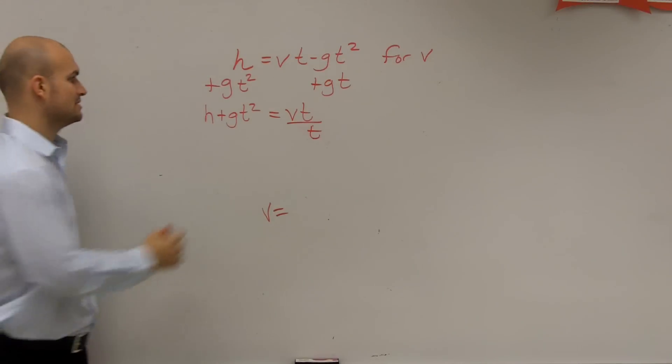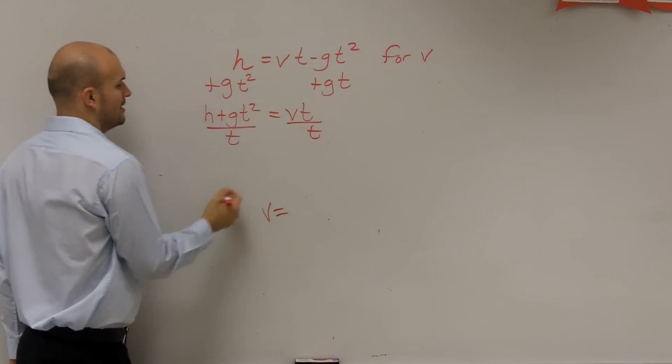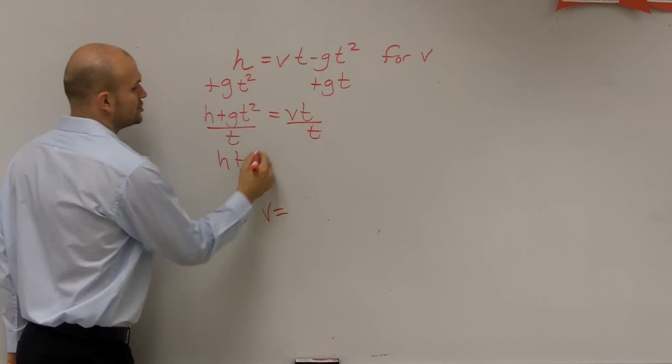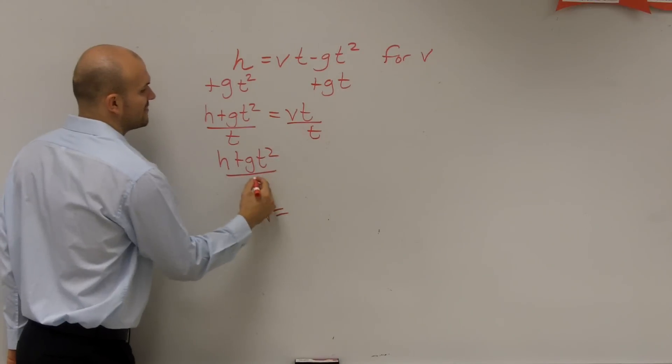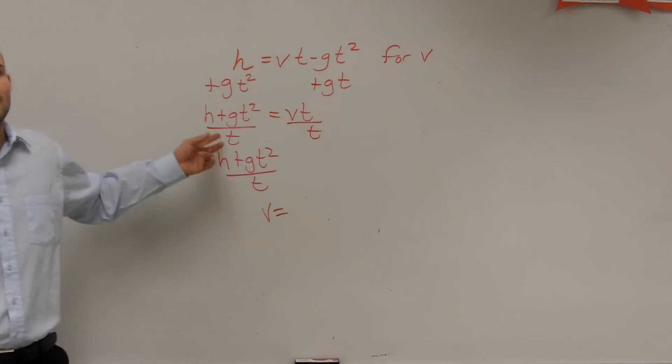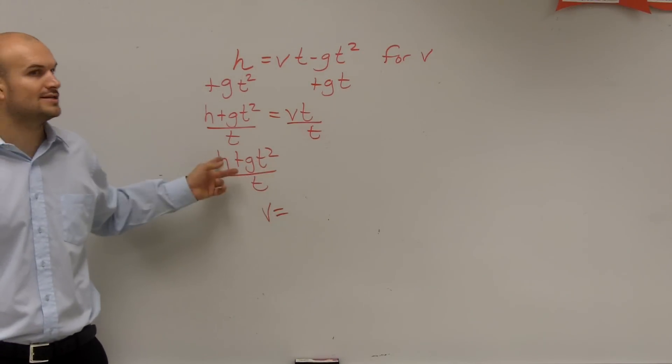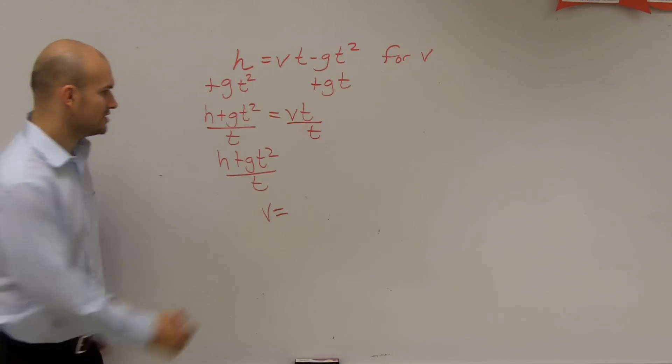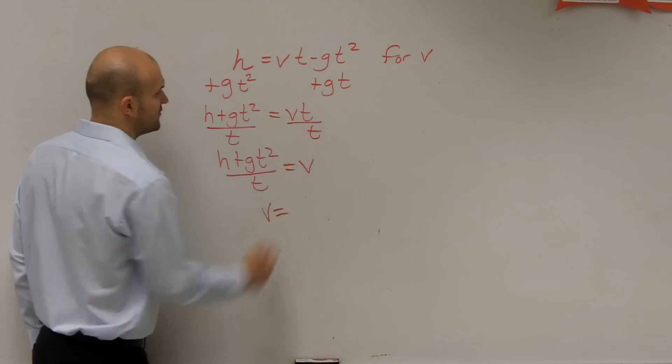Right? Inverse operation. So I divide by t, and I get h plus g t squared, divided by t. I can't simplify it at all. None of those are like terms.